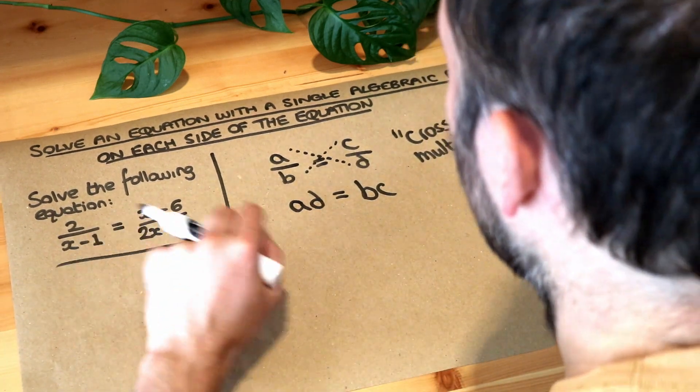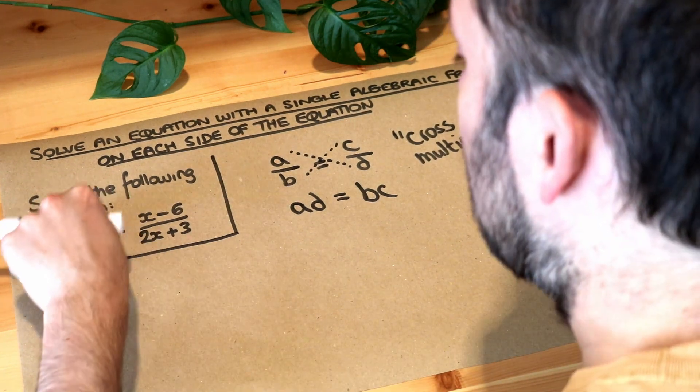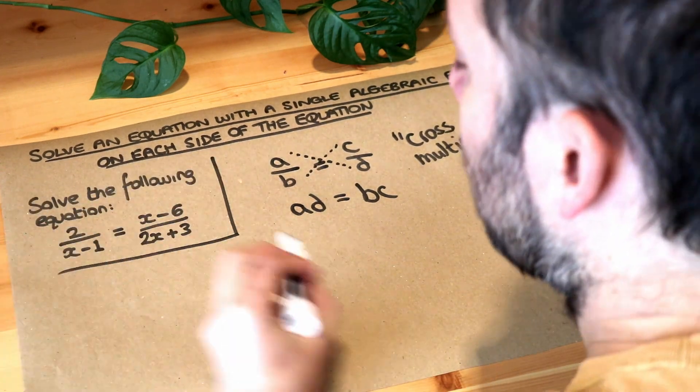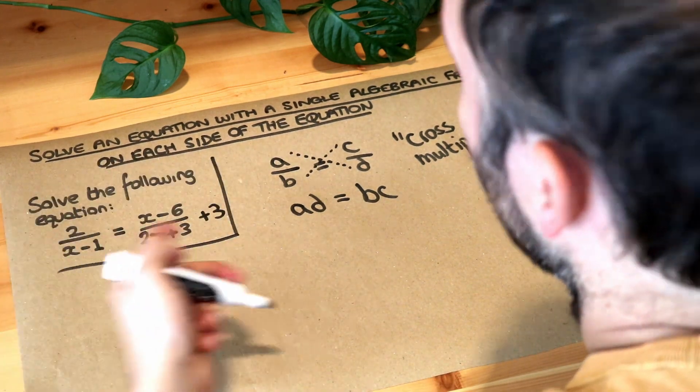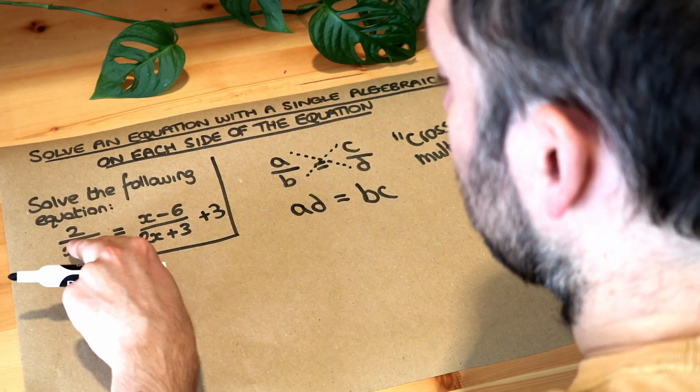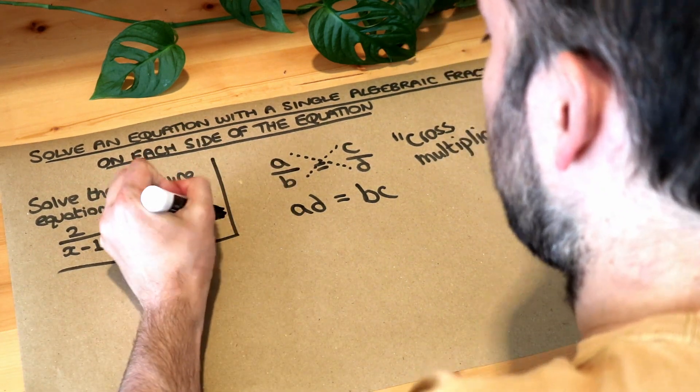So we can use the same principle here and you can use this principle of cross multiplication when you have fraction equals fraction but you don't have any other terms. So like if I had plus three for example on the end then we couldn't use this technique because we don't just have fraction equals fraction, we've got some other term there as well so that wouldn't work.